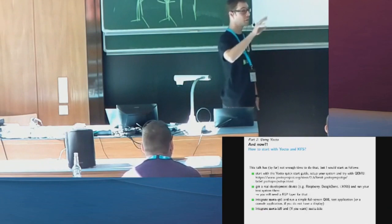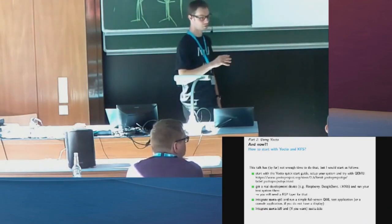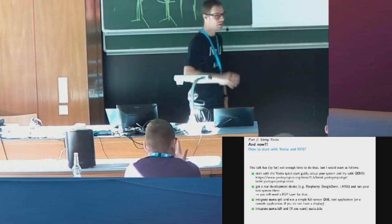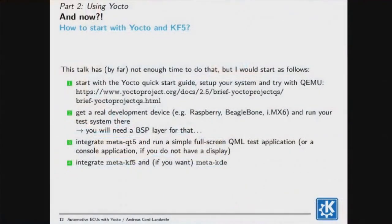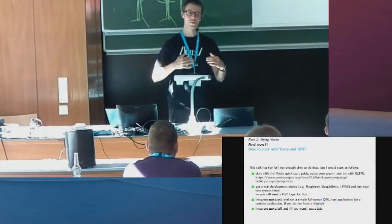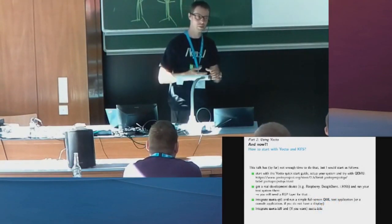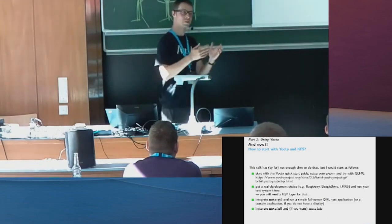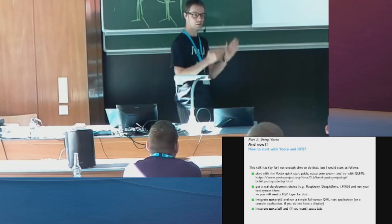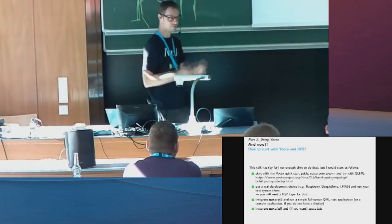That was a quick overview of what Yocto is and how it can be used. Here are some starting points if you want to dig deeper. First, there's a really good quick-start guide — the link is on the slide and was also visible at the conference website. It walks you through downloading sources, configuring BitBake, running it, waiting some hours, then putting the result into an emulator to see if it works. That's the first important step to get it building.